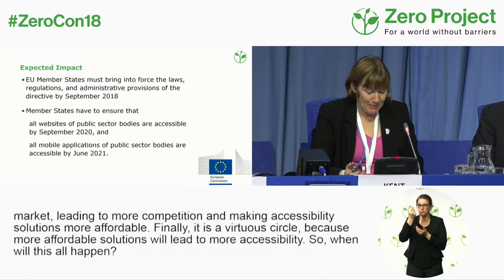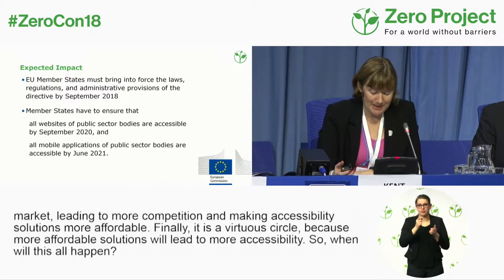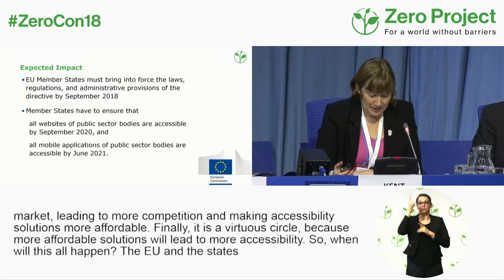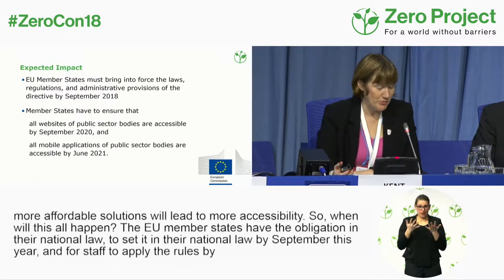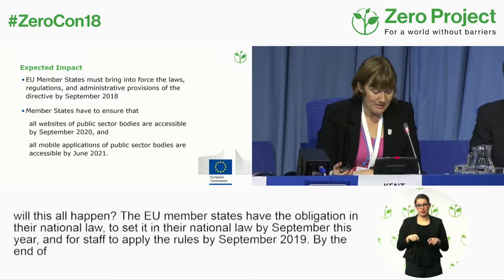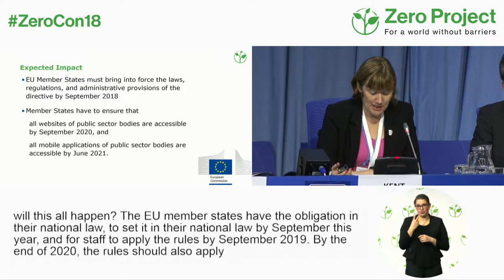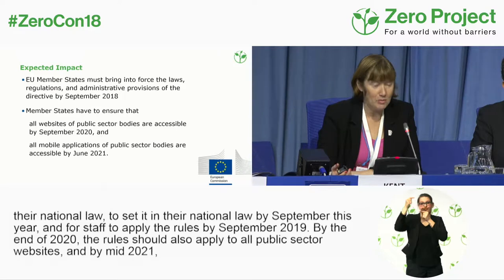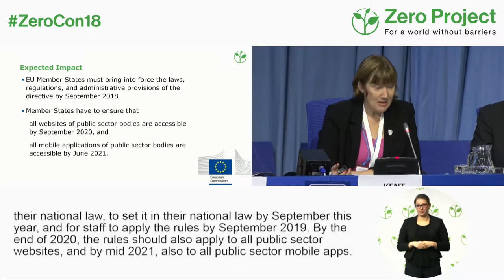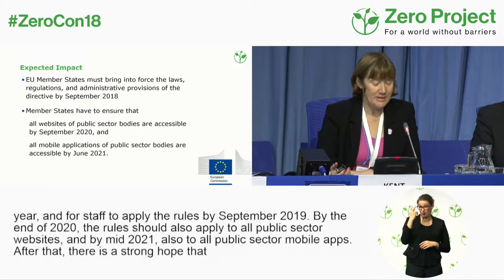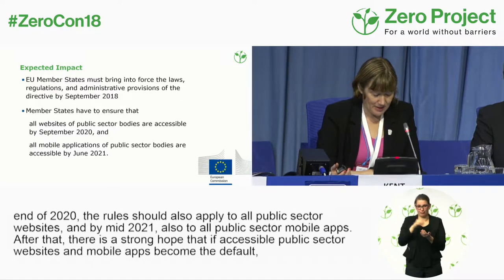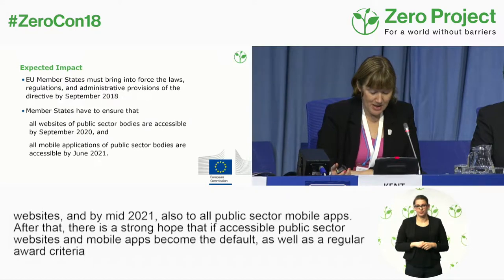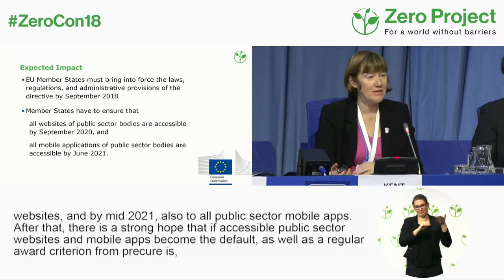When will this all happen? The EU member states have the obligation to set this in their national law by September this year, and should start to apply those rules by September 2019. By the end of 2020, the rules should apply to all public sector websites, and by mid-2021 also to all public sector mobile apps. After that, there is a strong hope that if accessible public sector websites and mobile apps become the default for development, as well as a regular award criterion from procurers, a spillover to developers and private sector contractors would happen.